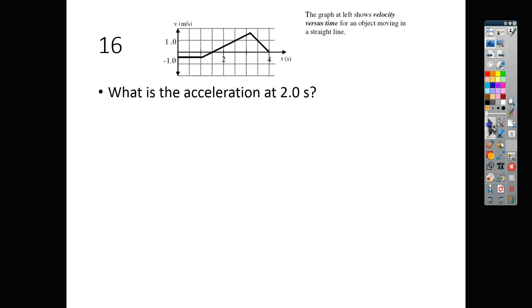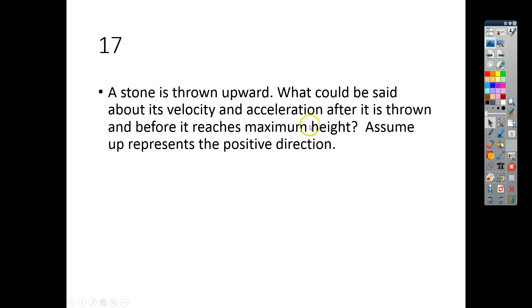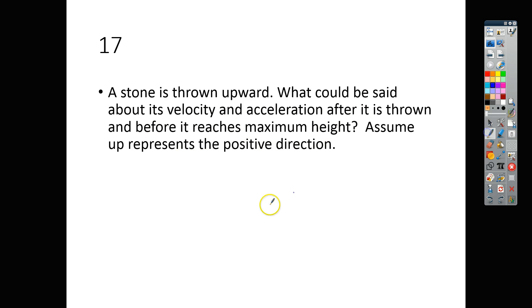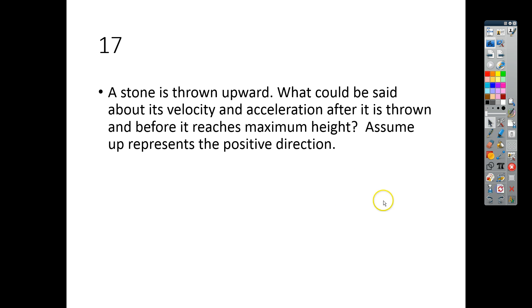For number 17, a stone is thrown upward. What could be said about its velocity and acceleration after it is thrown and before it reaches its maximum height? Assume up means a positive direction. So if it's moving up, our velocity is positive. And our acceleration, remember, due to gravity, is always down. So here we're going to make this negative. So right before it hits that top height, the velocity is positive and our gravity, which is an acceleration, is negative. And that is answer letter A for number 17.